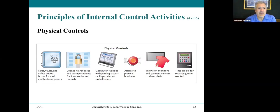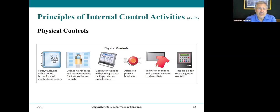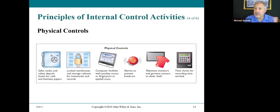Physical controls include safes, vaults, safe deposit boxes, locks, computer facilities with pass-key access, alarms, television monitors, and time clocks. Many of you have seen these kinds of physical controls in place.